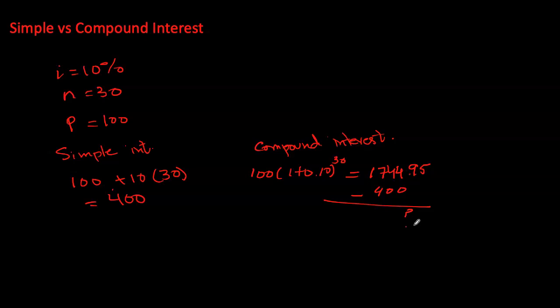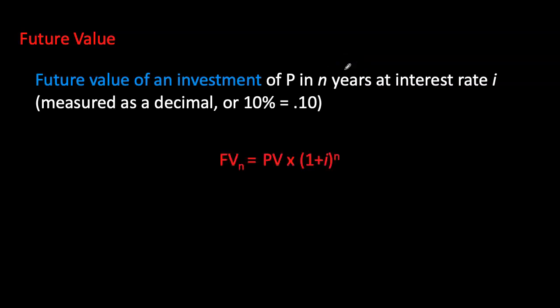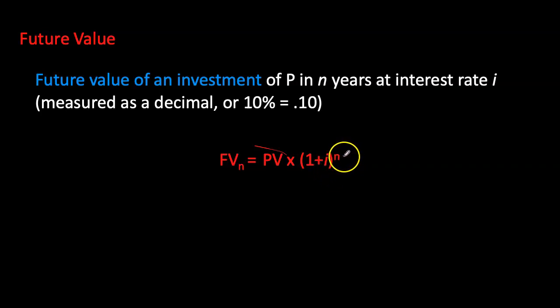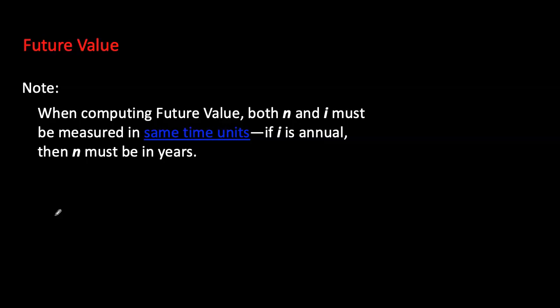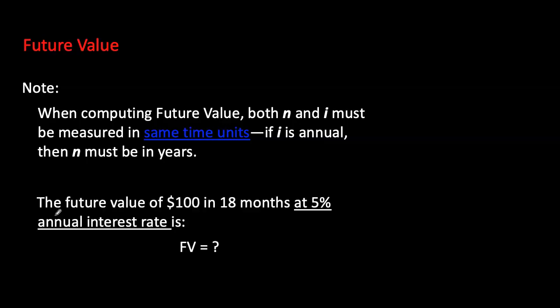The general formula for future value is: FV = P × (1 + i)^n, where n is the number of years. When calculating future value, you must keep n and i in the same time unit — if your interest rate is annual, n should be in years; if compounding quarterly, n should be in quarters. For example, $100 at 5% annual interest for 18 months: convert 18 months to 1.5 years, giving approximately $107.59.